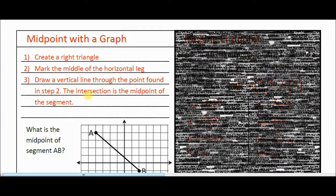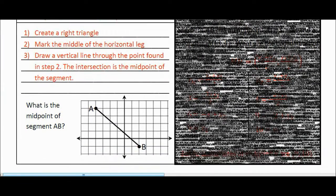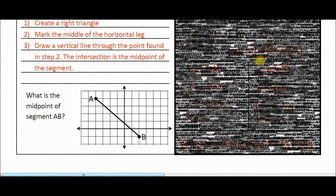Now I'm going to continue with how to apply these three steps. So here's our example question. What is the midpoint of segment AB? Well, the first step says to create a right triangle. So I'm going to go ahead and do that.